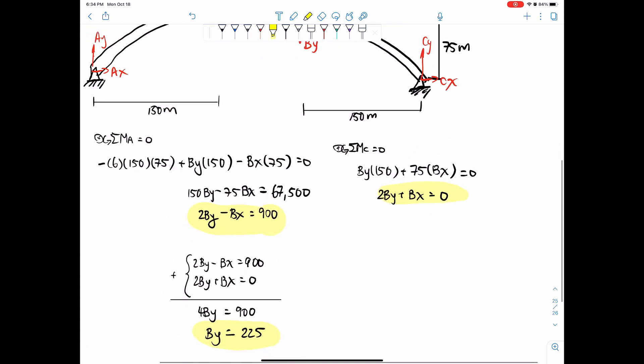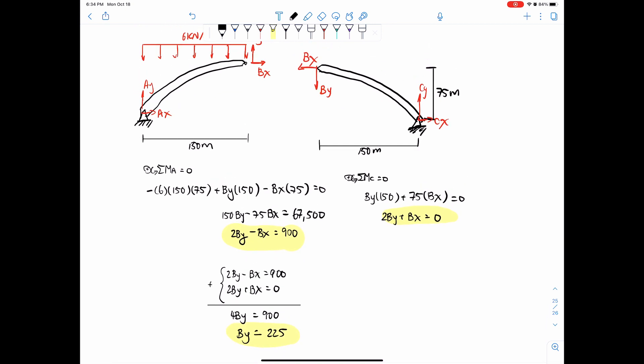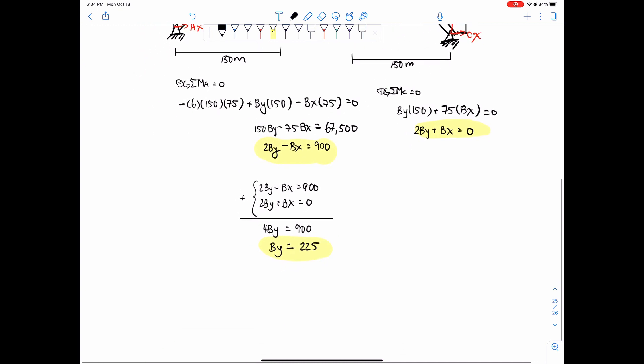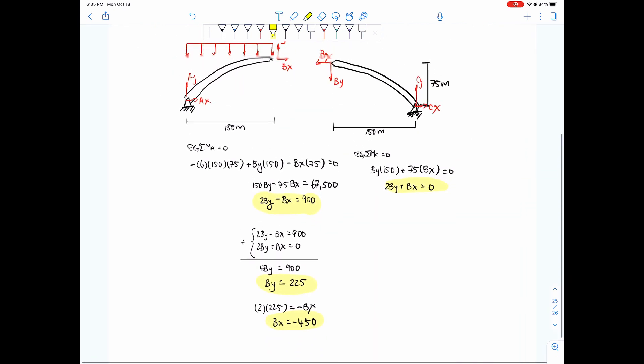So once you have this BY value, the rest of the problem is really simple because we can solve for CY and BX and CX and all the reactions. So let's just first solve for the remaining reaction. So if BY equals 225, we can plug that into the second equation. So 2 times 225 equals negative BX, and that would equal BX equals negative 450. So that's your second intermediate reaction that you need to solve for.